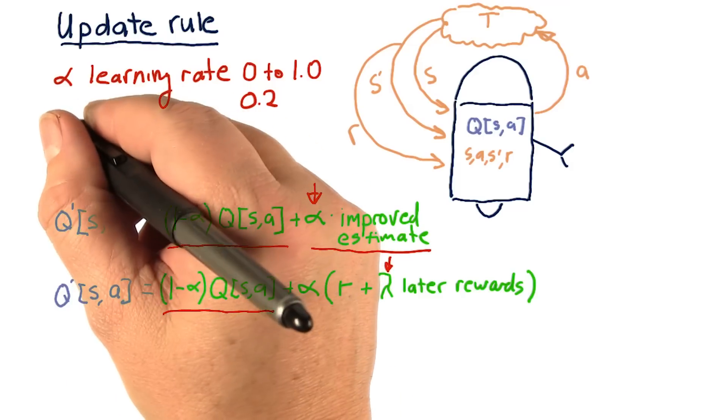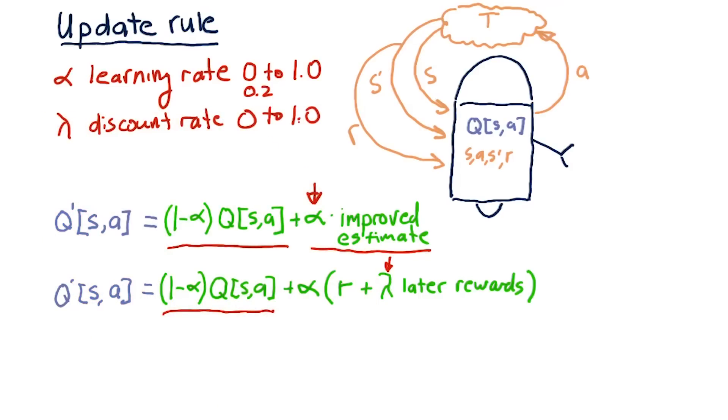What gamma is, is the discount rate. And similar to alpha, gamma usually ranges from 0 to 1. A low value of gamma means that we value later rewards less. Remember the discount rate when we were talking about bonds? Same thing. A low value of gamma equates to essentially a high discount rate.